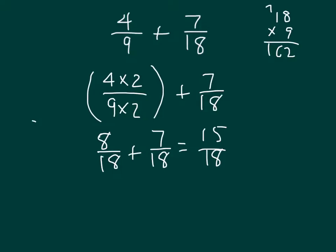Now, you'll see here that 15 eighteenths is not in simplest form. Because I can divide the numerator and denominator both by 3. 15 divided by 3 is 5, and 18 divided by 3 is 6. So that 4 ninths plus 7 eighteenths equals 5 sixths.